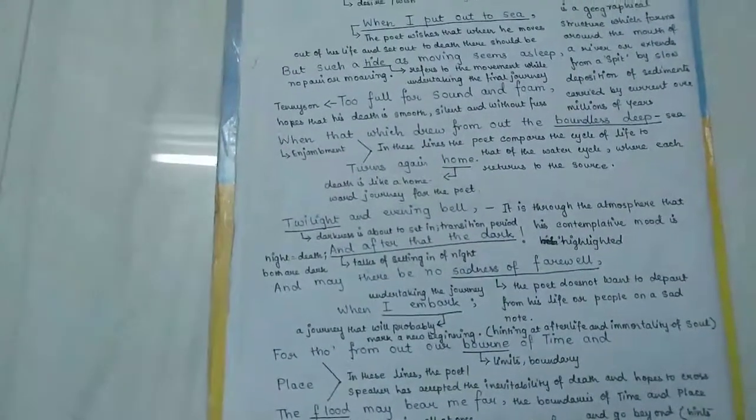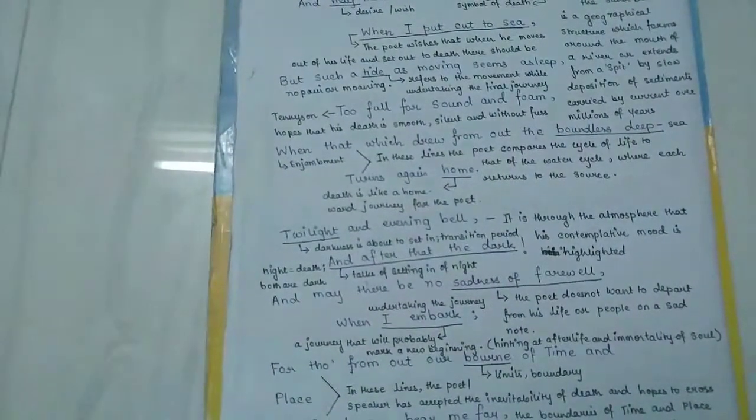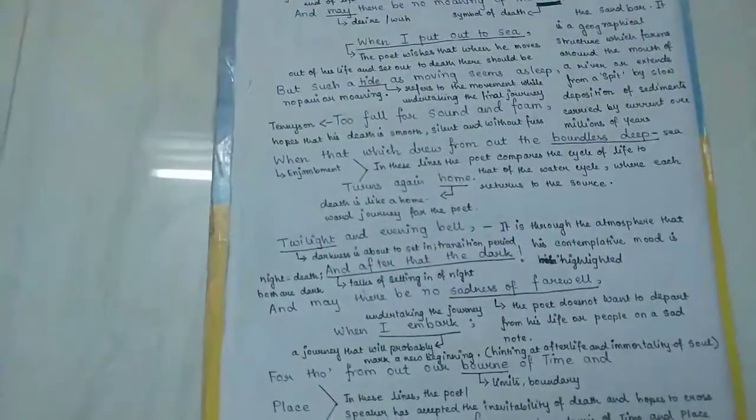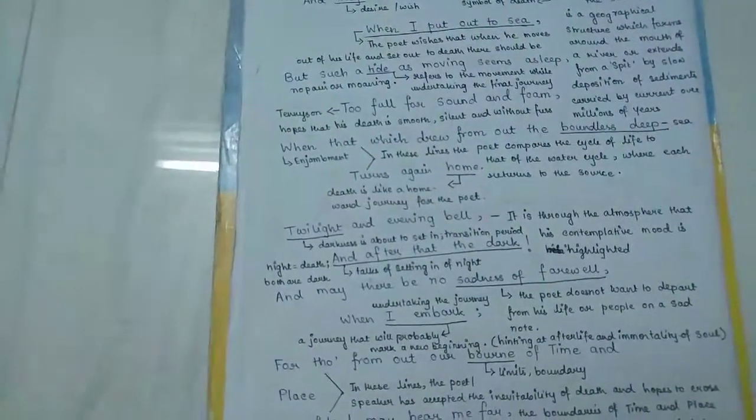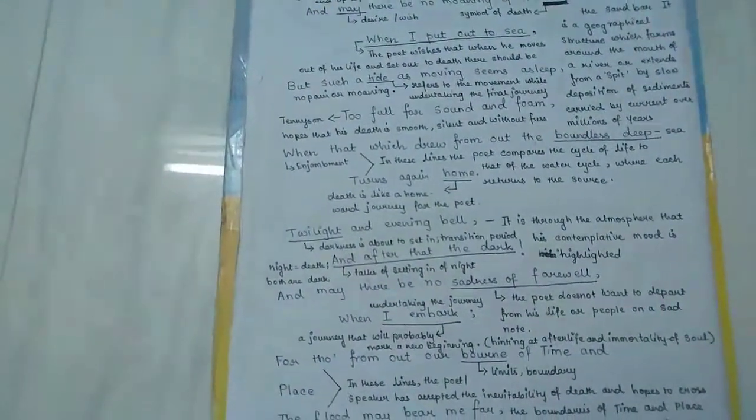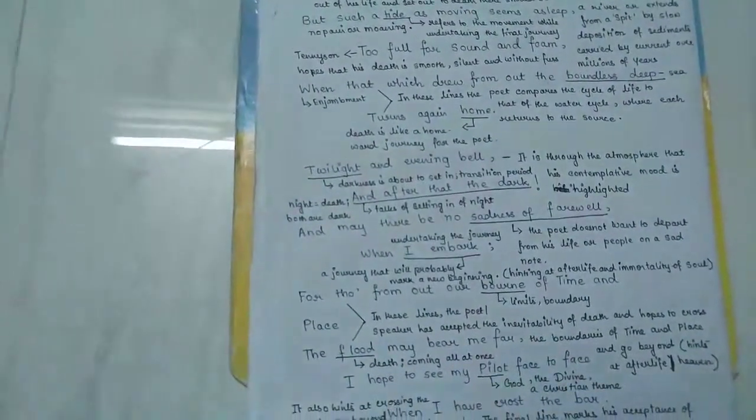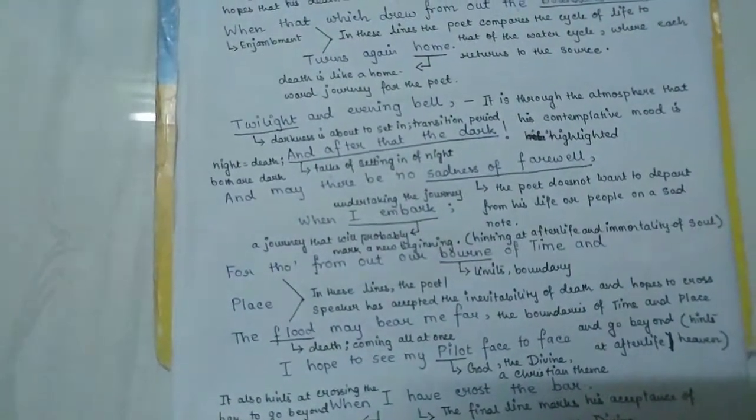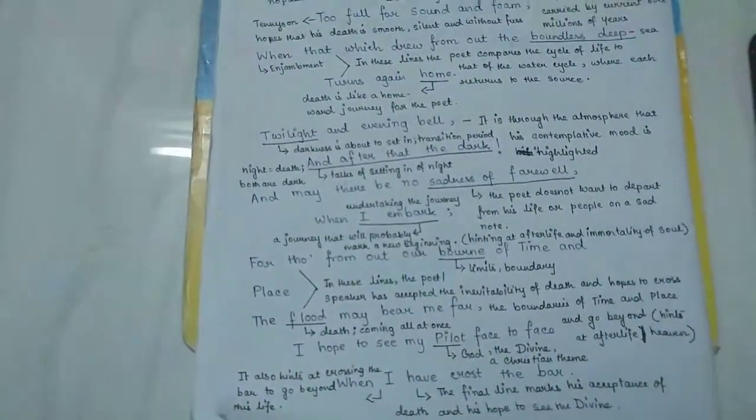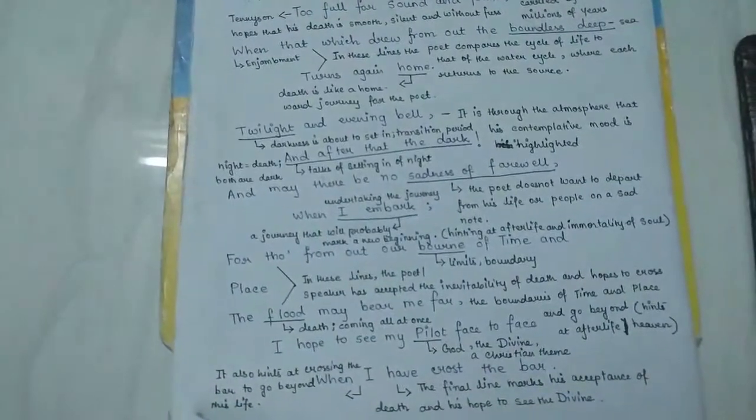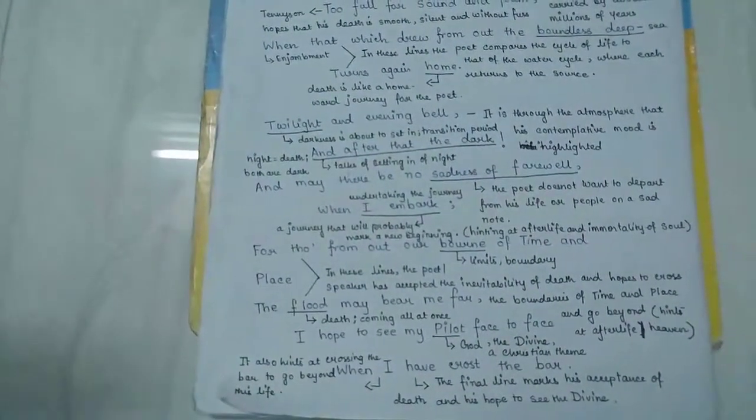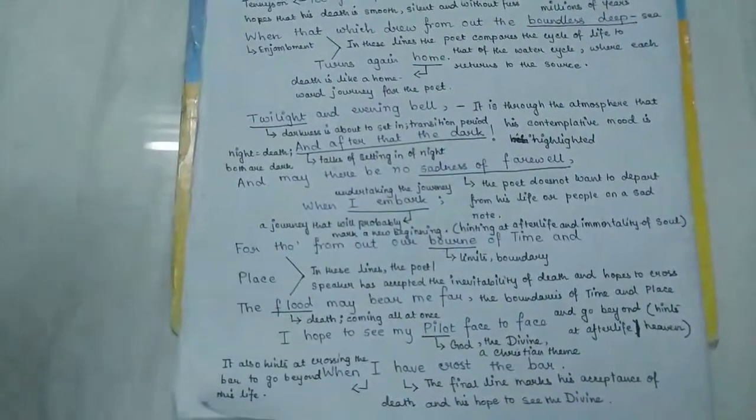But here, the indication hints at God, the presence of the divine, his desire to meet the divine. A Christian theme is evoked once again, where he wishes to stand face to face and look into the eyes of God when he has crossed the bar, when he has crossed the threshold of life, gone beyond the limits of time and place, where he is at one with the pilot, the one who has so long been the driving force of his life. The final line marks his acceptance of death and his hope to see the divine, and to experience a kind of unity with the divine.